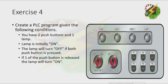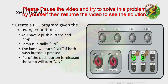Let's have our demonstration first. The lamp is initially on. When I press PB1, nothing will happen. Again, when I press PB2, nothing will happen also. But when I press both push buttons, the lamp will turn off. I want you to pause this video and try to solve this problem. Then you can resume to see the answer for this exercise.